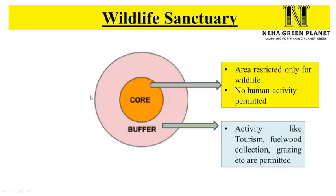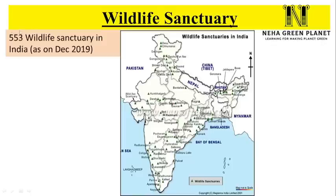In national parks, only tourism was permitted in the buffer zone, but in wildlife sanctuaries, multiple activities like tourism, fuel wood collection, and grazing are allowed. As per 2019 data, India has 553 wildlife sanctuaries. For example, the Jingen Wildlife Sanctuary, Wild Ass Wildlife Sanctuary, and Chilka Bird Sanctuary.